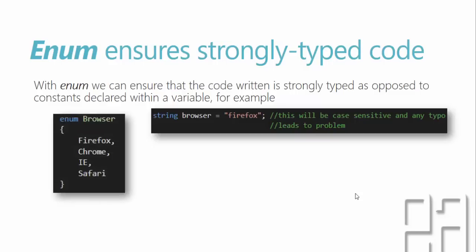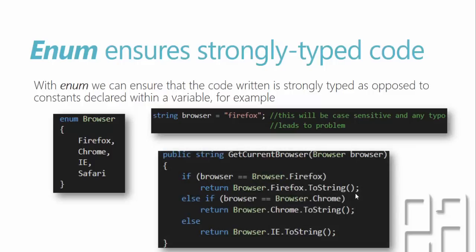With enum, you can create a distinct type called an enumeration list. You give it a name like Browser and define constants like Firefox, Chrome, IE, and Safari within it. Then, while passing that into a method like getCurrentBrowser, you can pass the Browser enum as a parameter. The calling method will pass a strongly typed value like Browser.Firefox or Browser.Chrome, and then you perform the condition statement and return the value.